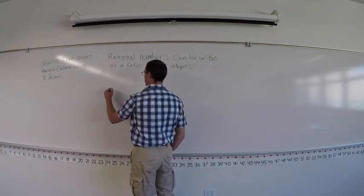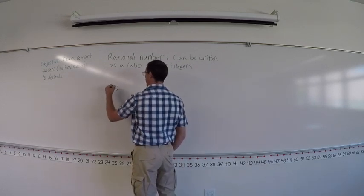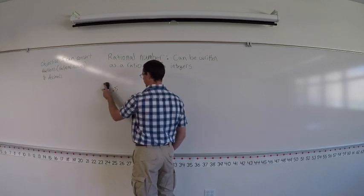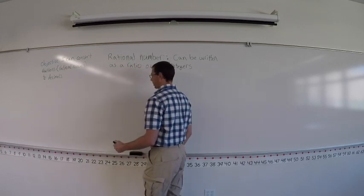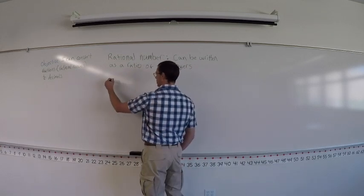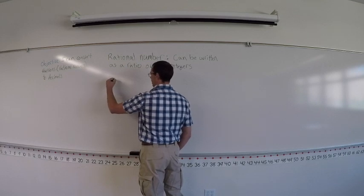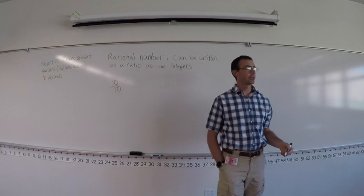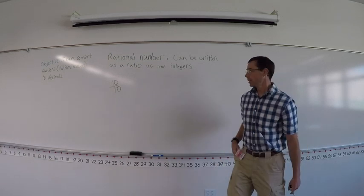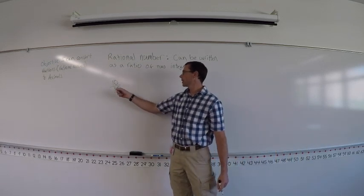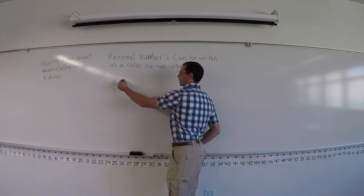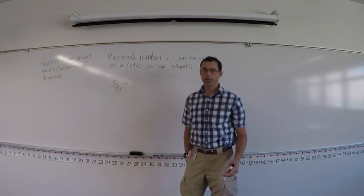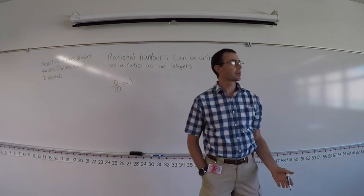What would 10 out of 10 be? Mr. Schultz wanted me to do this example. Is 10 out of 10 a rational number? Yes — 10 is an integer, 10 is an integer, and we know that reduces to one whole. And one is a rational number.